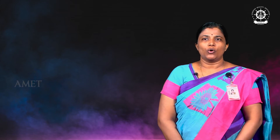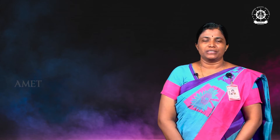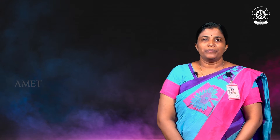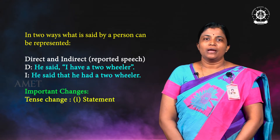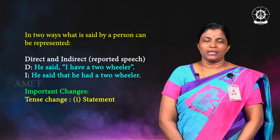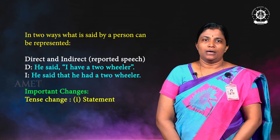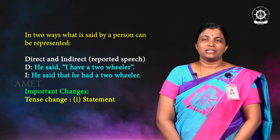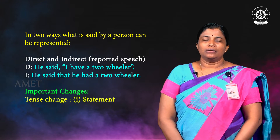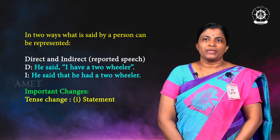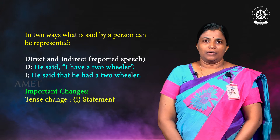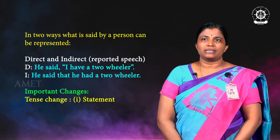Good morning learners, welcome to the course Grammar and Usage for Undergraduates. We are going to learn reported speech in this module. What is said by a person can be represented — somebody has spoken something and we are going to report it to somebody else. This is reported speech. There are two types: one is direct and another is indirect. Indirect is the reported speech.